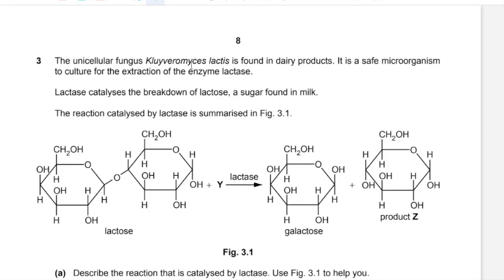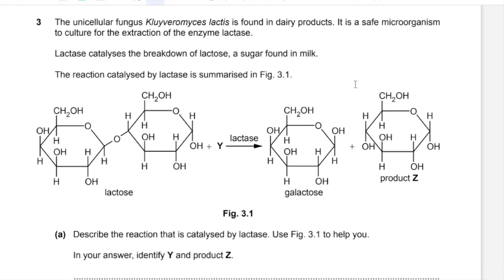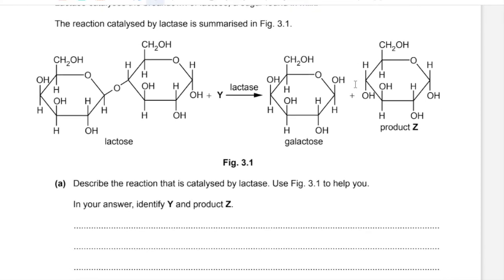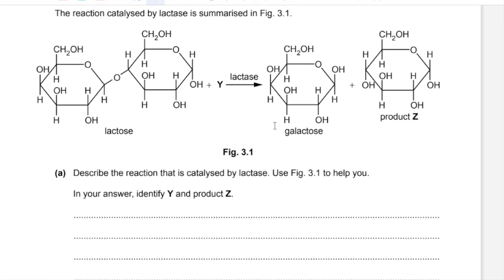Question 3. The unicellular fungus Kluyveromyces lactis is found in dairy products. It is a safe microorganism to culture for the extraction of the enzyme lactase. Lactase catalyzes the breakdown of lactose, a sugar found in milk. Part A: Describe the reaction catalyzed by lactase, identify Y and product Z. The reaction is hydrolysis because the glycosidic bond between two monosaccharides is broken down, requiring water — which is Y — and product Z is alpha glucose.